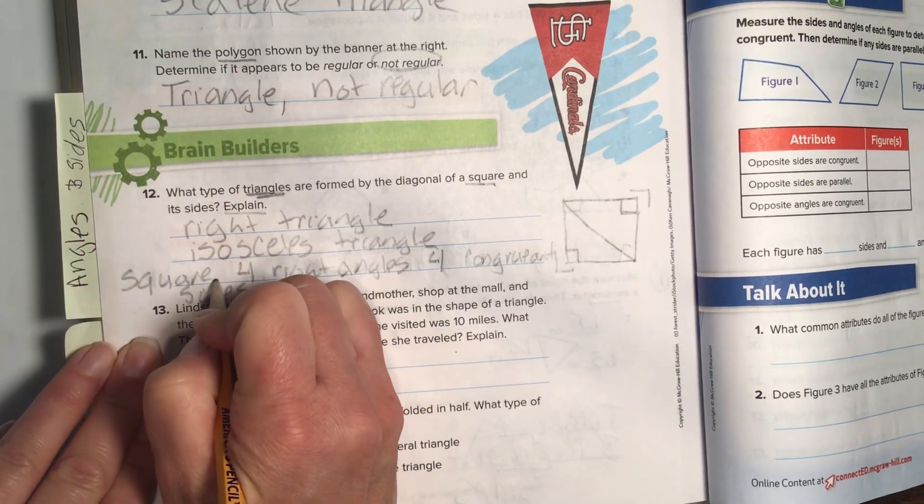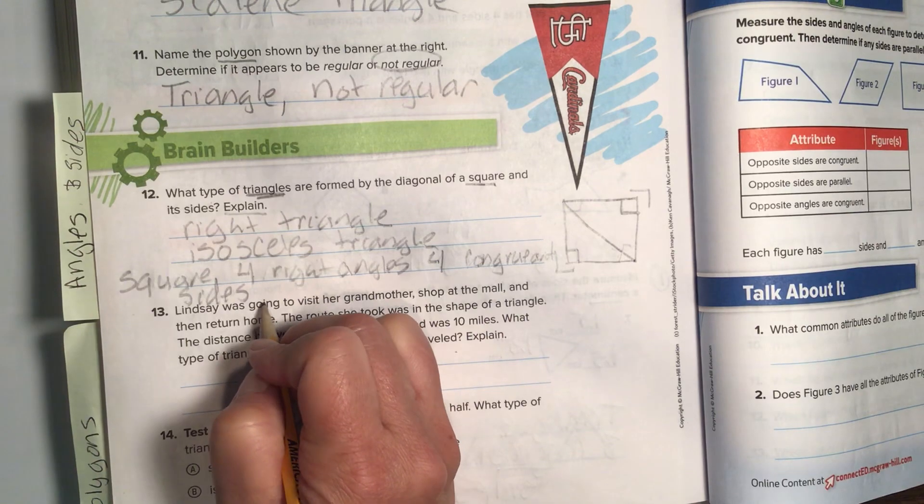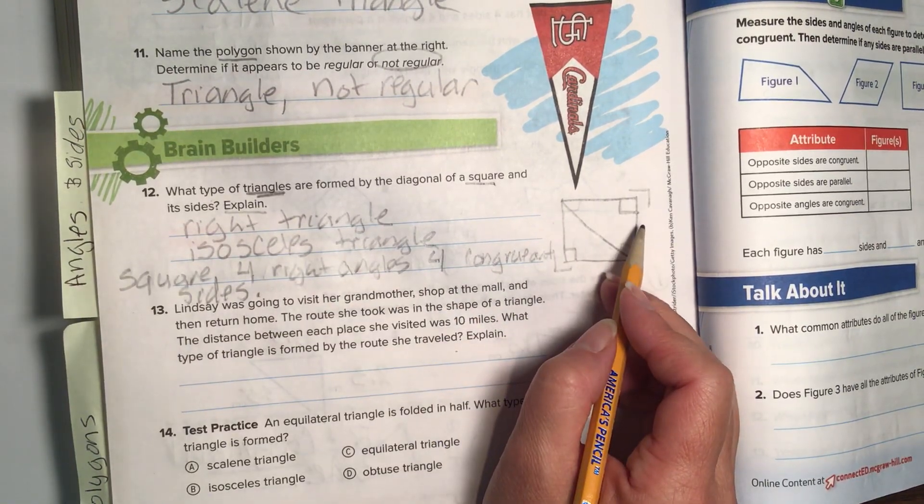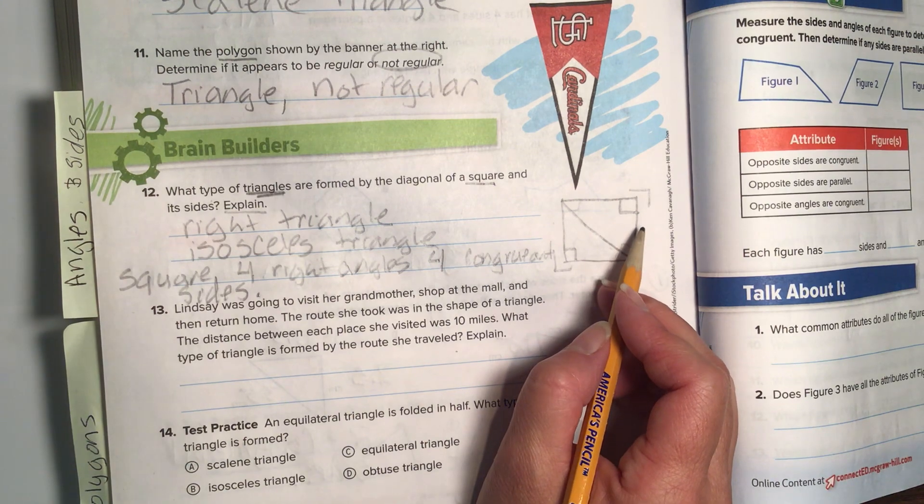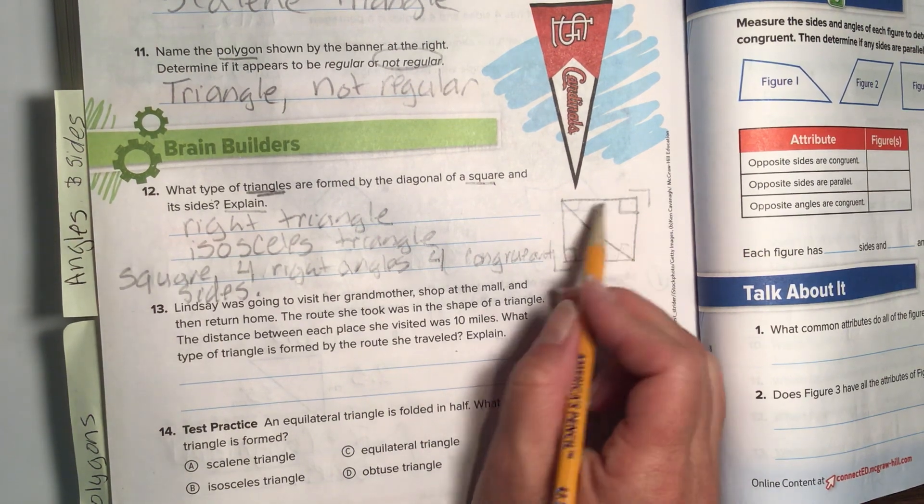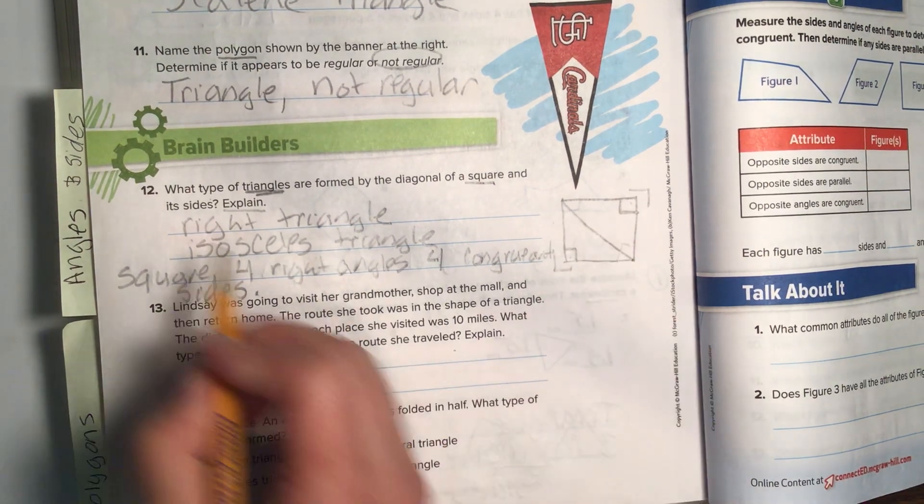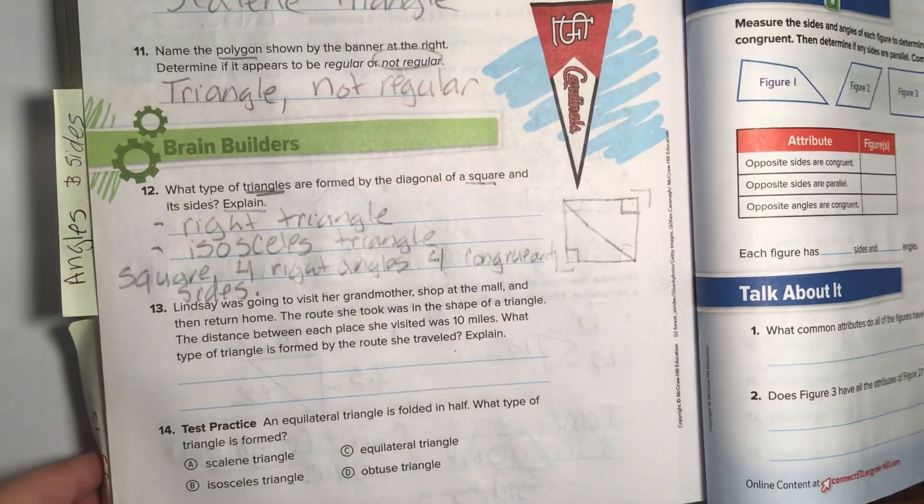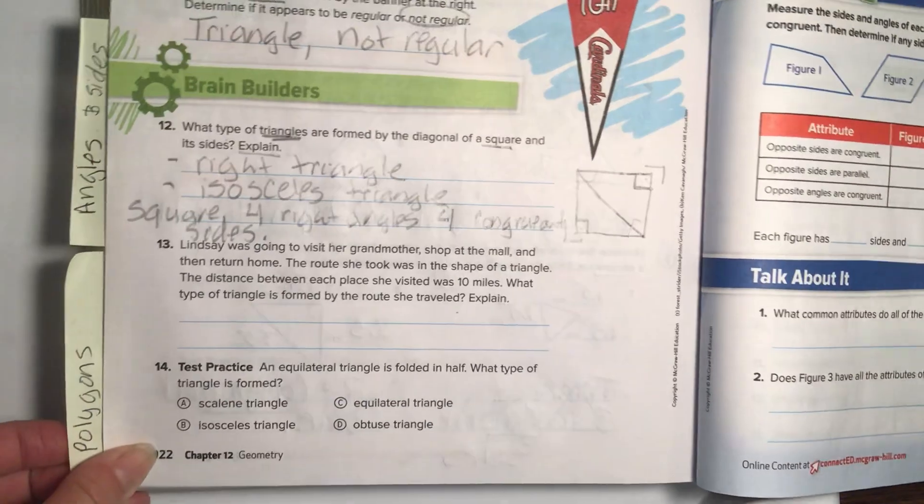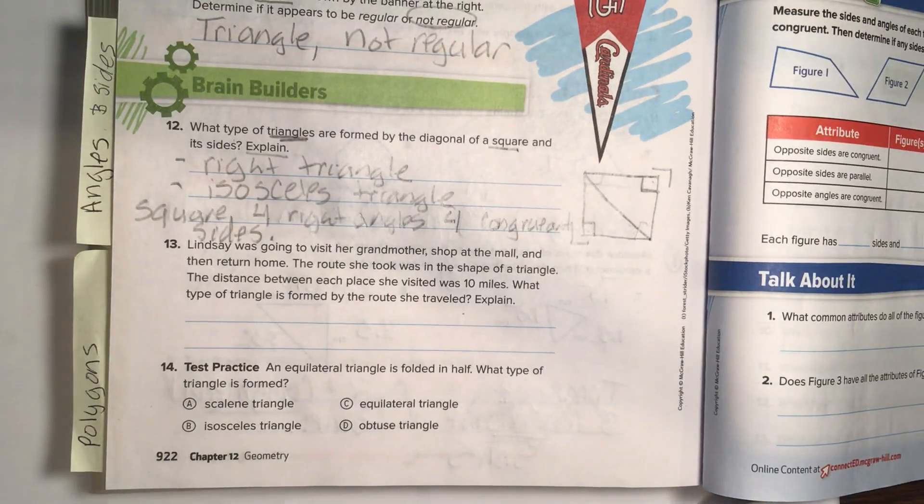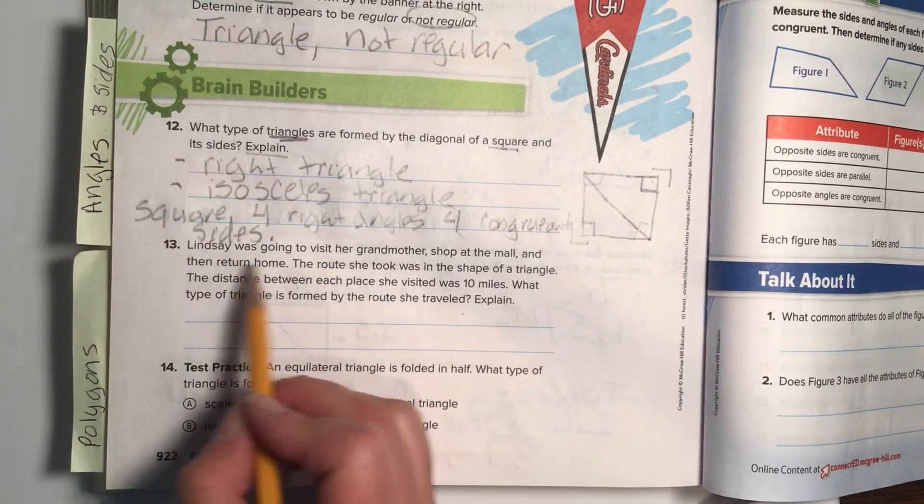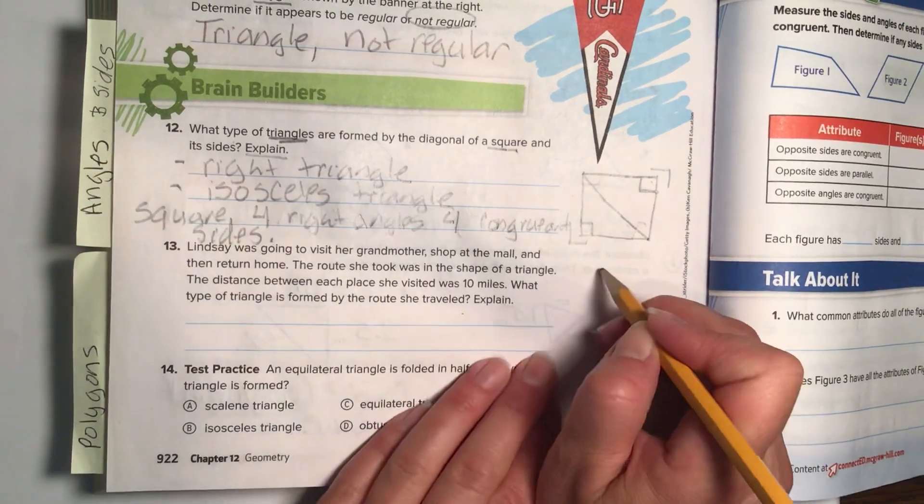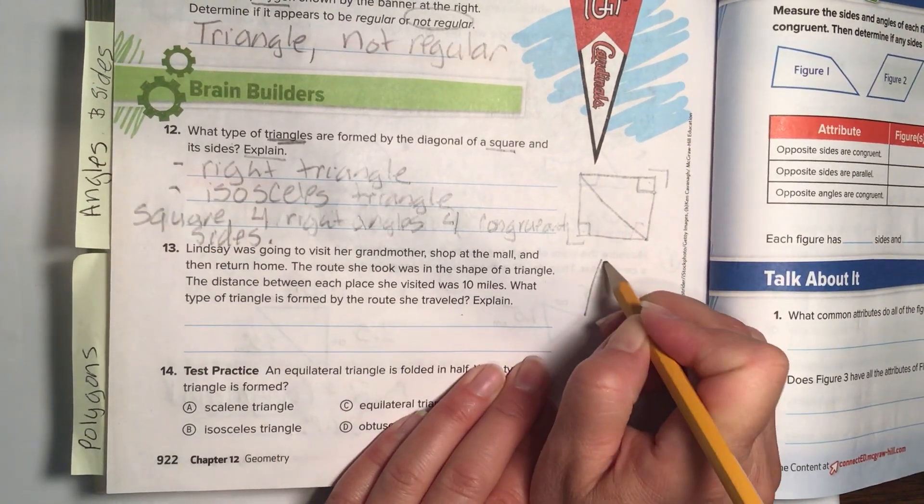They never give us enough room in these math books, do they? And then, just have your picture over here showing that you drew it in half to equal two triangles with a right angle and two congruent sides. Okay, that's all we need for number 12. So, let's move to number 13. Lindsay was going to visit her grandmother, shop at the mall, and return home. The route she took was the shape of a triangle. Okay, well, we can draw that just fine. The shape of the triangle. Each place she visited was 10 miles.